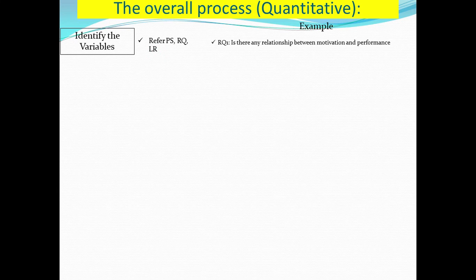This is basically the first phase. I will show you some example. For example, research question number one in our research: is there any relationship between motivation and performance? Based on this research question, what are the variables that we can identify? The first one is motivation and the second one is performance. So this is the first step — identifying the variables.